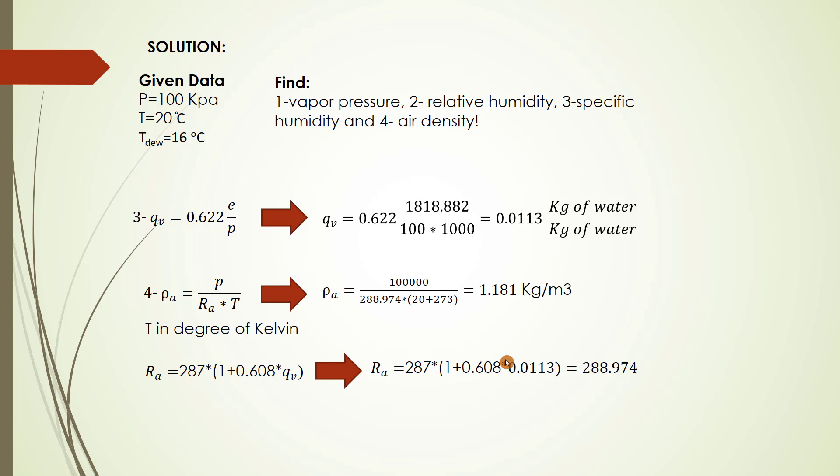We have to use P in pascal, so pressure equals 100,000 pascal over 288.974. And we have to convert temperature from degree Celsius to degree Kelvin, so T equals 20 plus 273. So the air density equals 1.181 kilogram per meter cubed. That is the solution for the example. Have a nice time.